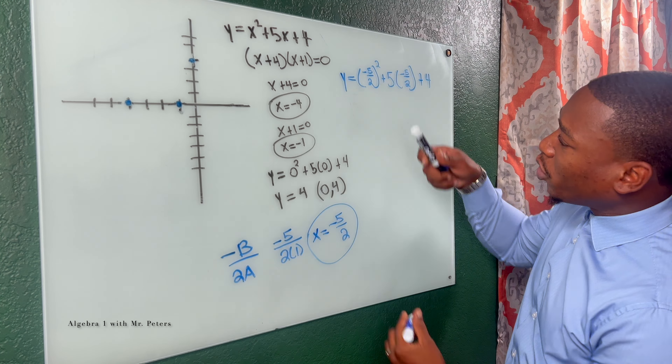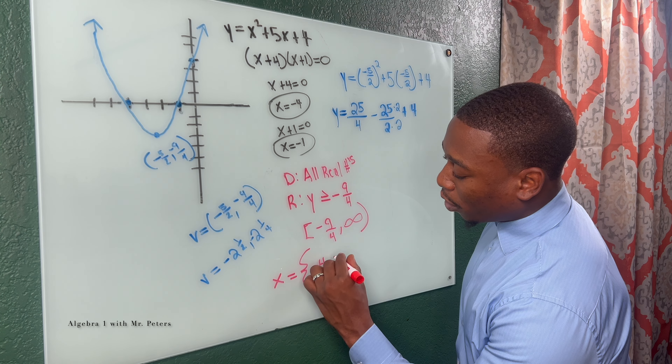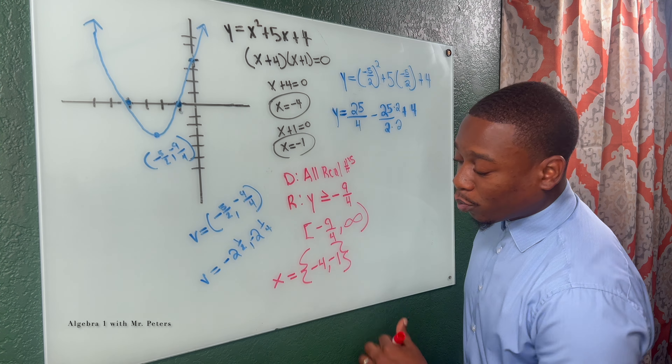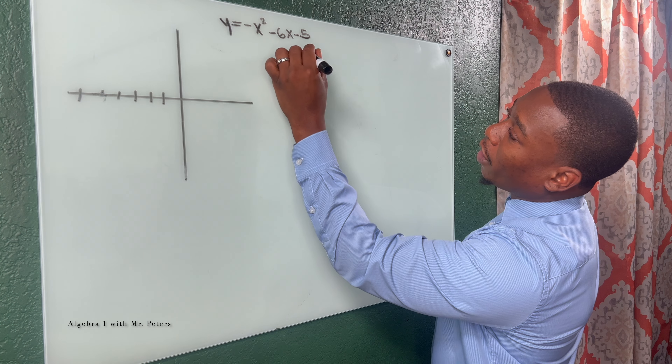Now we have three to four points to draw the parabola graph. For domain: since this graph opens up or down, it's always all real numbers. For range: y is greater than or equal to negative nine over four, or in interval notation, bracket negative nine over four to infinity. For the solutions or roots, x equals negative four comma negative one.